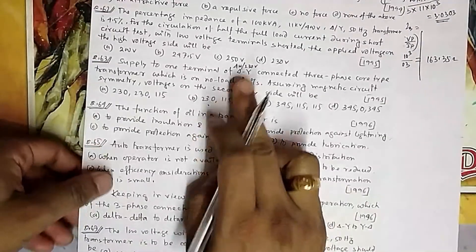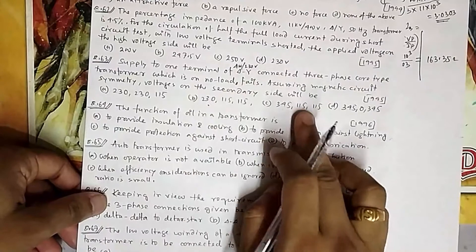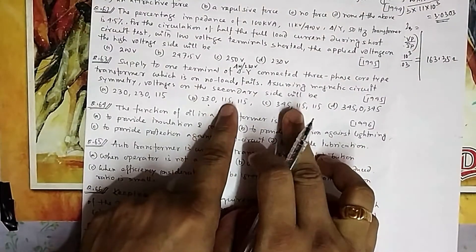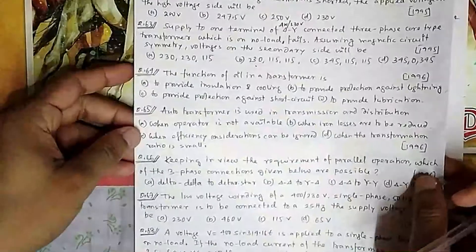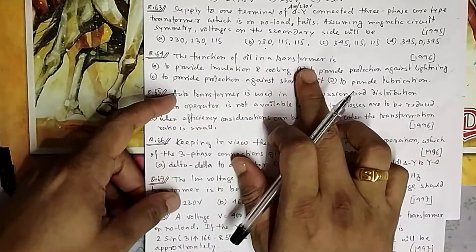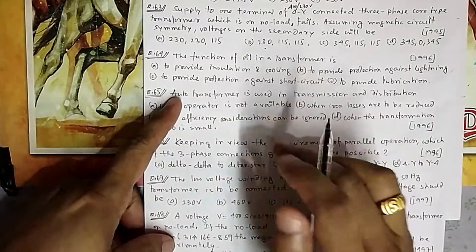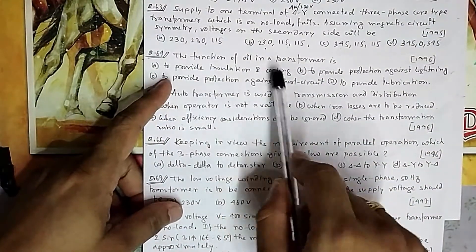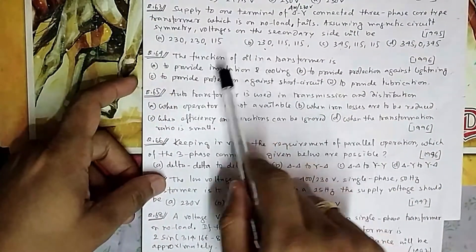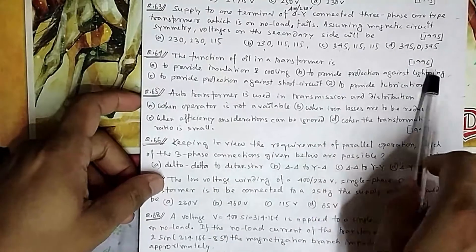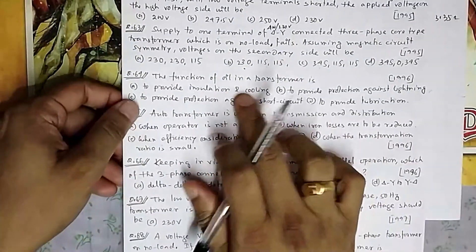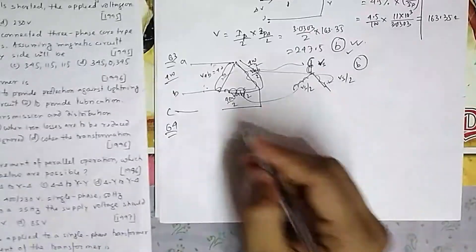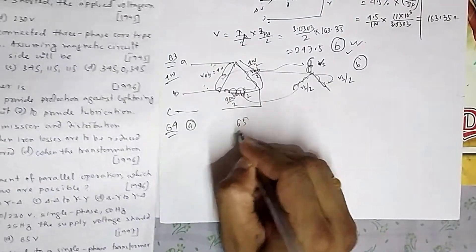There could be some ambiguity if the rating isn't specified, but for a 400/230 V transformer it is option B. Question 64: The function of oil in a transformer is for insulation and cooling only — not for lightning protection, short circuit protection, or lubrication. That is option A, and this should be well known.